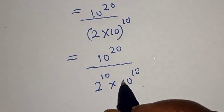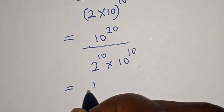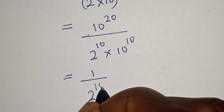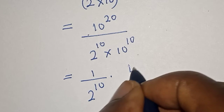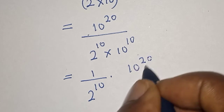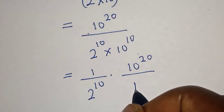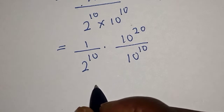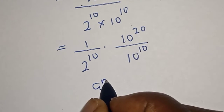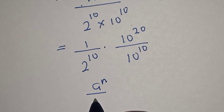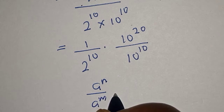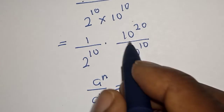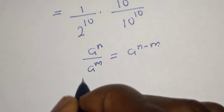This is equal to 1 over 2 raised to power 10, multiplied by 10 raised to power 20 over 10 raised to power 10. Now, if you have a raised to power n over a raised to power m, this is equal to a raised to power n minus m.